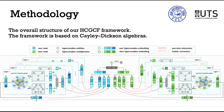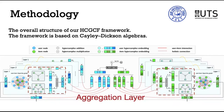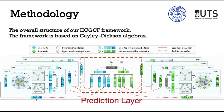We focus on the collaborative filtering task with implicit feedback. The following figure illustrates our HCGCF architecture. There are three parts in HCGCF. The first part is the embedding layer, which initializes embeddings for users and items in the hypercomplex space. The second part is the hypercomplex graph convolutional layer, which learns hypercomplex embeddings by exploiting high-order user-item relationships. The third part is the prediction layer, which generates a preference score of a user-item pair based on the refined embeddings.